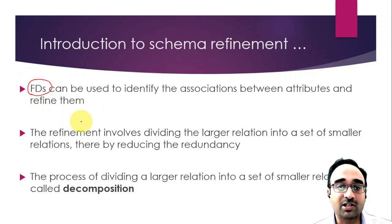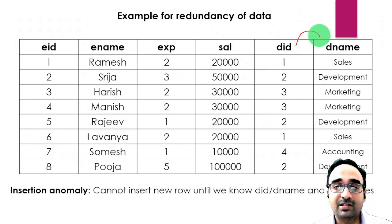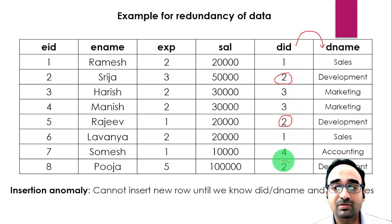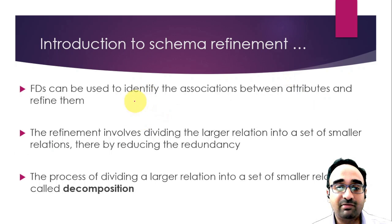Next we talk about functional dependencies, or FDs, which will be covered in detail later. FDs are used to identify associations between attributes. For example, whenever the department ID is 2, the department name is automatically 'development' — this is a functional dependency. Once you find the FDs, you try to normalize the tables or relational instances.